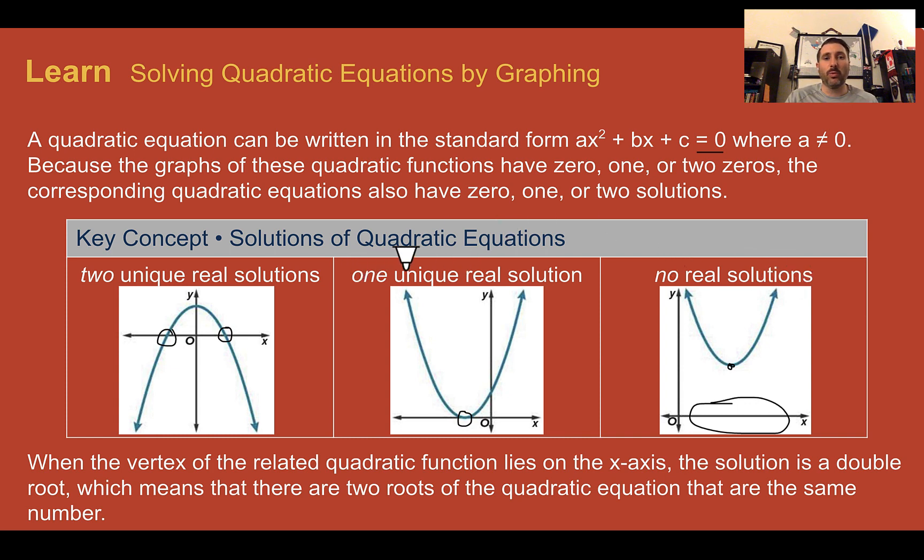And then with this middle one, with one real solution, this is also called a double root. Because both of the things that work, if you remember back when we were factoring quadratic trinomials, you usually got two answers. You usually had two binomials. Both of them are in the same place. So this is called a double root because it has the same zero both times.